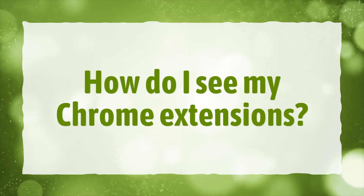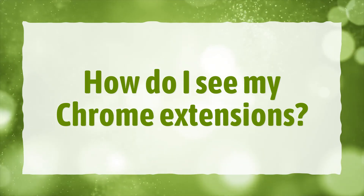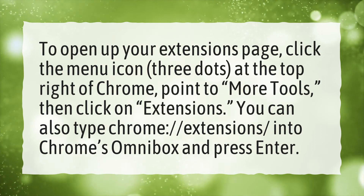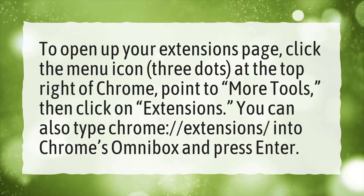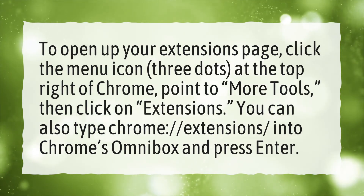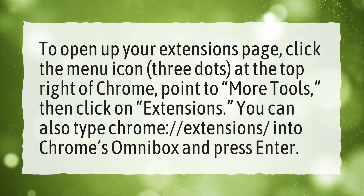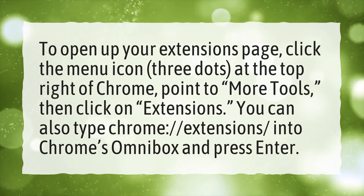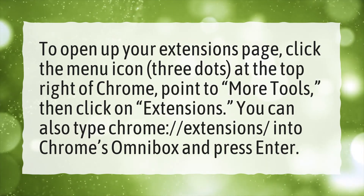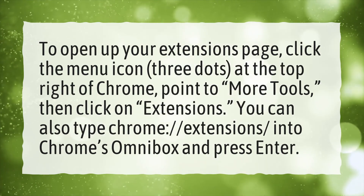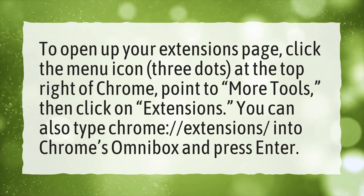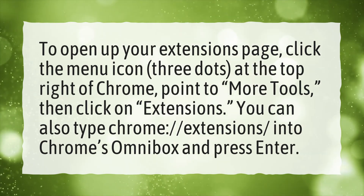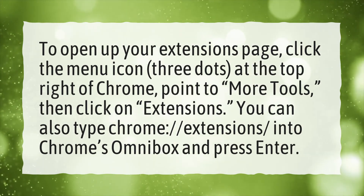How do I see my Chrome Extensions? To open up your extensions page, click the menu icon — three dots — at the top right of Chrome, point to More Tools, then click on Extensions. You can also type chrome://extensions/ into Chrome's Omnibox and press Enter.